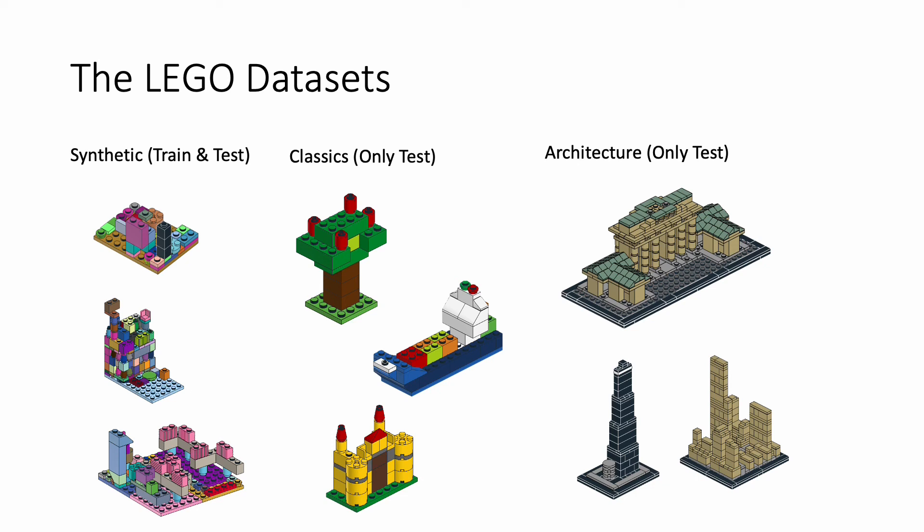To train our first stage neural modules, we generate a large-scale synthetic dataset. We also created two datasets from real-world LEGO manuals. The first one named Classics contains simple daily objects. The second one, called Architecture, contains more complex building-shaped LEGO objects. From the examples, we can see the three datasets cover a diverse range of 3D shapes.